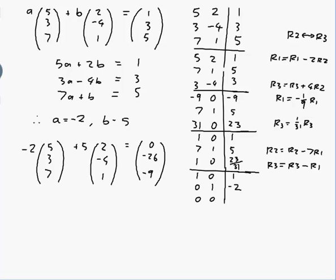Sorry about that. Just thought my answers were wrong, but I think I'm okay. And then down the bottom here, row 3 becomes row 3 minus row 1, so 23 over 31 minus 1, whatever that is.